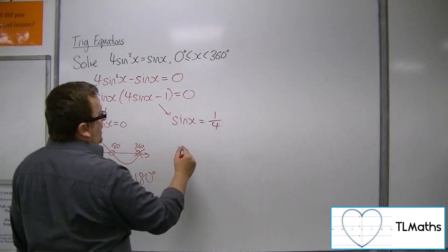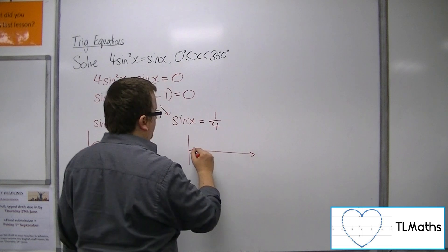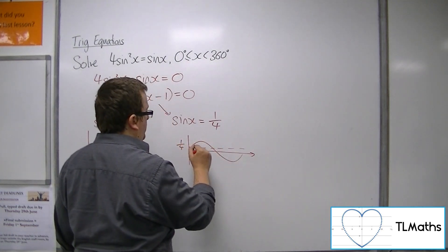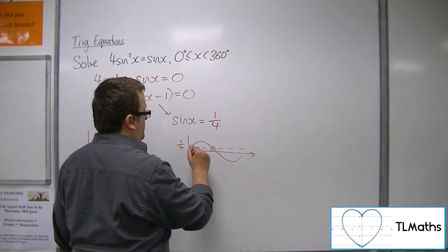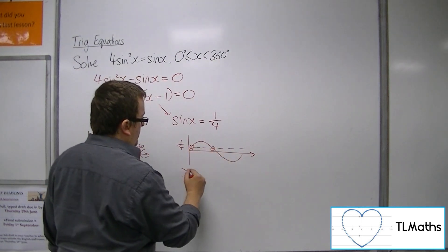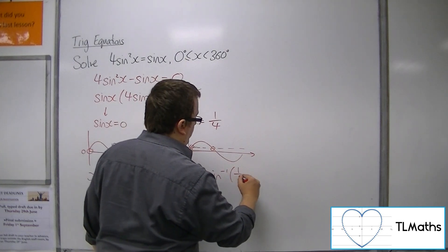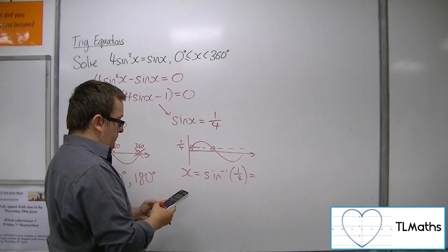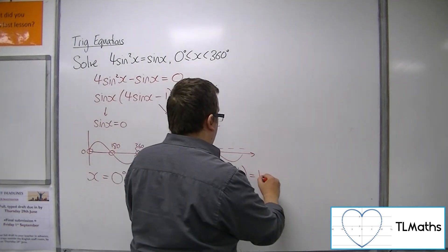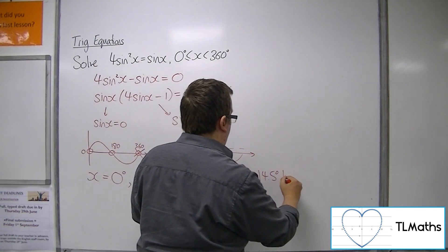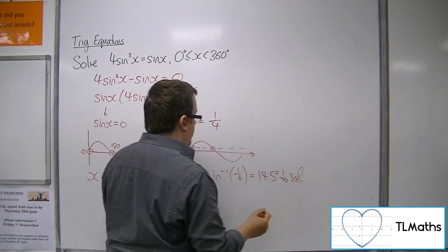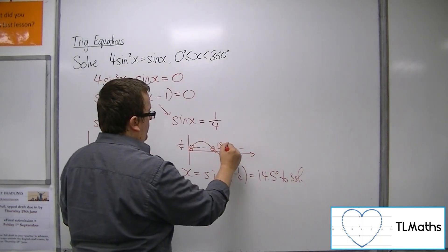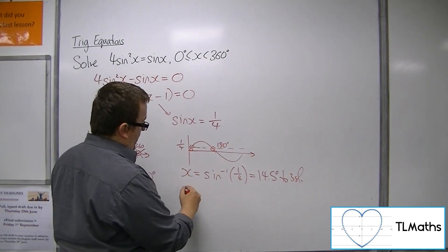Now for sinx equals 1 quarter, there's 1 quarter. There are the two solutions I'm looking for. So the first solution is the inverse sine of a quarter, which is 14.5 degrees to 3 significant figures. And the second solution is 14.5 degrees away from 180.